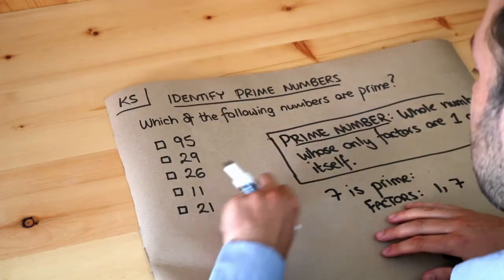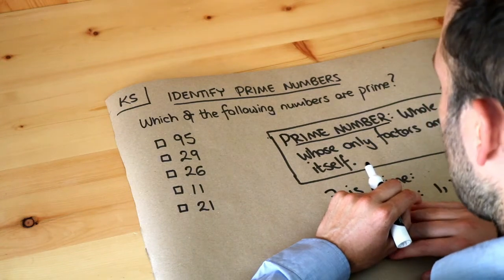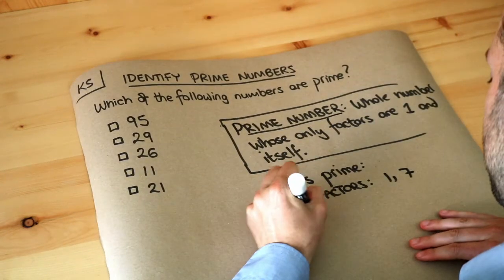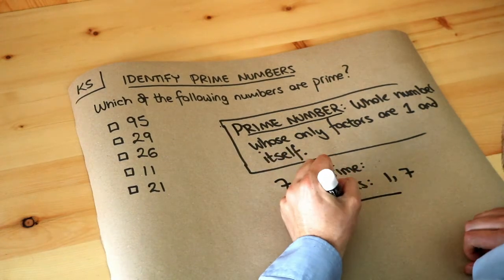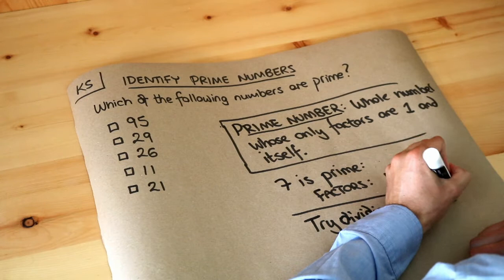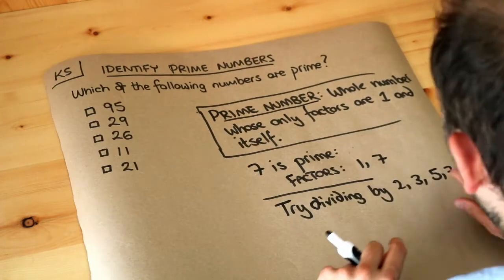Now looking at these, let's consider different numbers it might be divisible by. The numbers I would try are dividing by two, three, five, seven, and then you want to be absolutely sure you could check eleven.